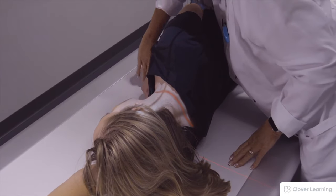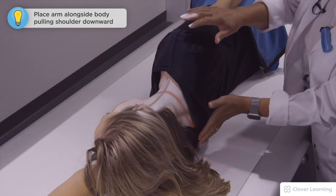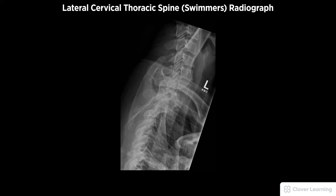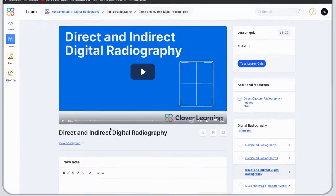Keeping the left marker anteriorly, we're going to have her take her arm and place it down by her body and pull the shoulder down. We're going to suspend respiration — the patient is going to hold very still — and the exposure is made. A diagnostic lateral cervicothoracic spine or swimmer's view must be free of motion and rotation, with adequate penetration through the shoulder region, demonstrating the lower cervical and upper thoracic vertebrae with proper visualization of soft tissue and bony detail.